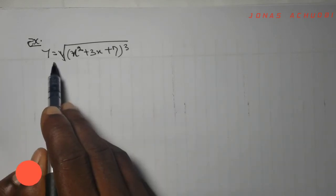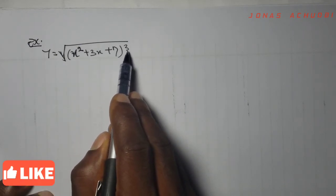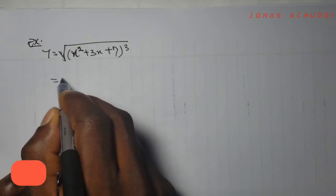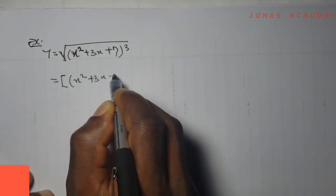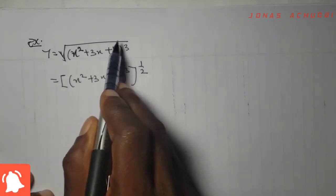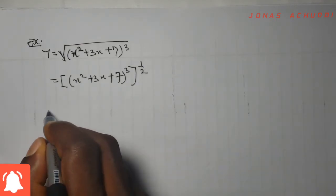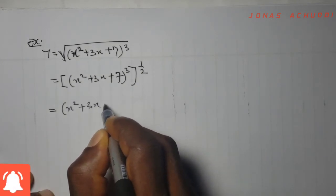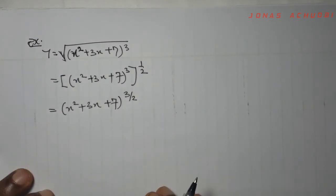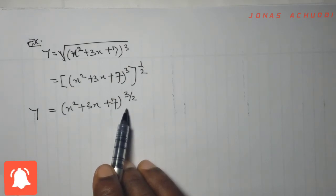Here we have y equal to the square root of (x² + 3x + 7) raised to the power 3. I can see a function of a function of a function. However, by indices, the square root raised to the power 3 means we can write this as (x² + 3x + 7)^(3/2), multiplying the powers 3 and 1/2 to get 3/2. We have only simplified the original function. Once again, we see a function carrying another function inside it.